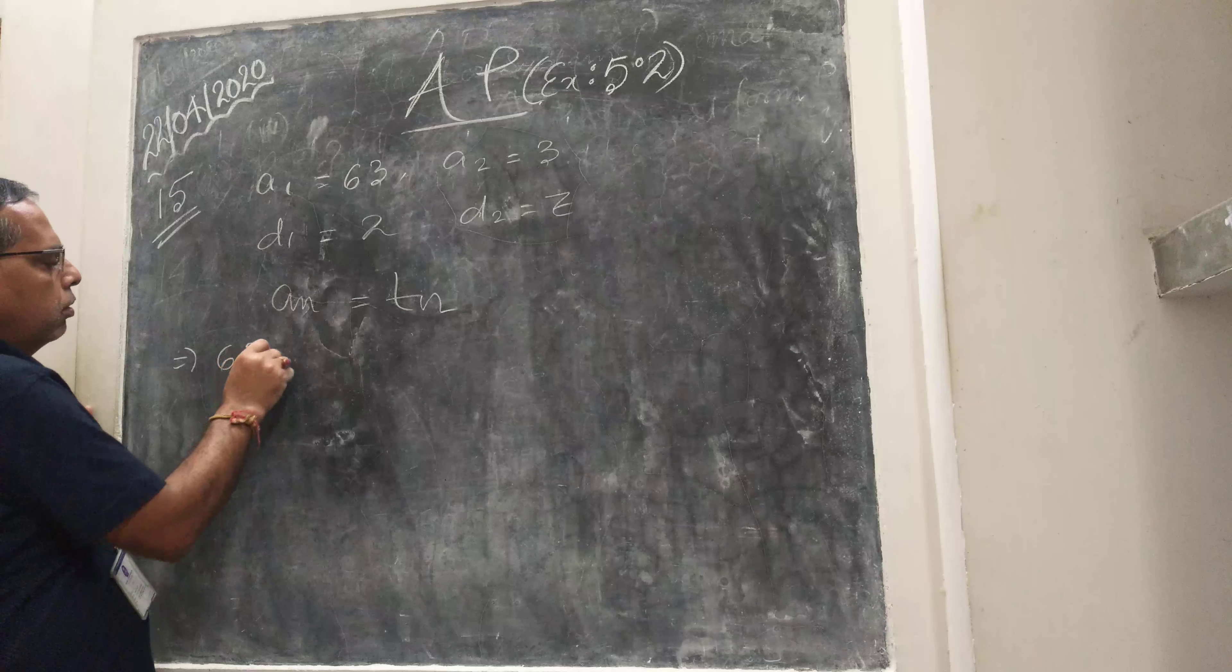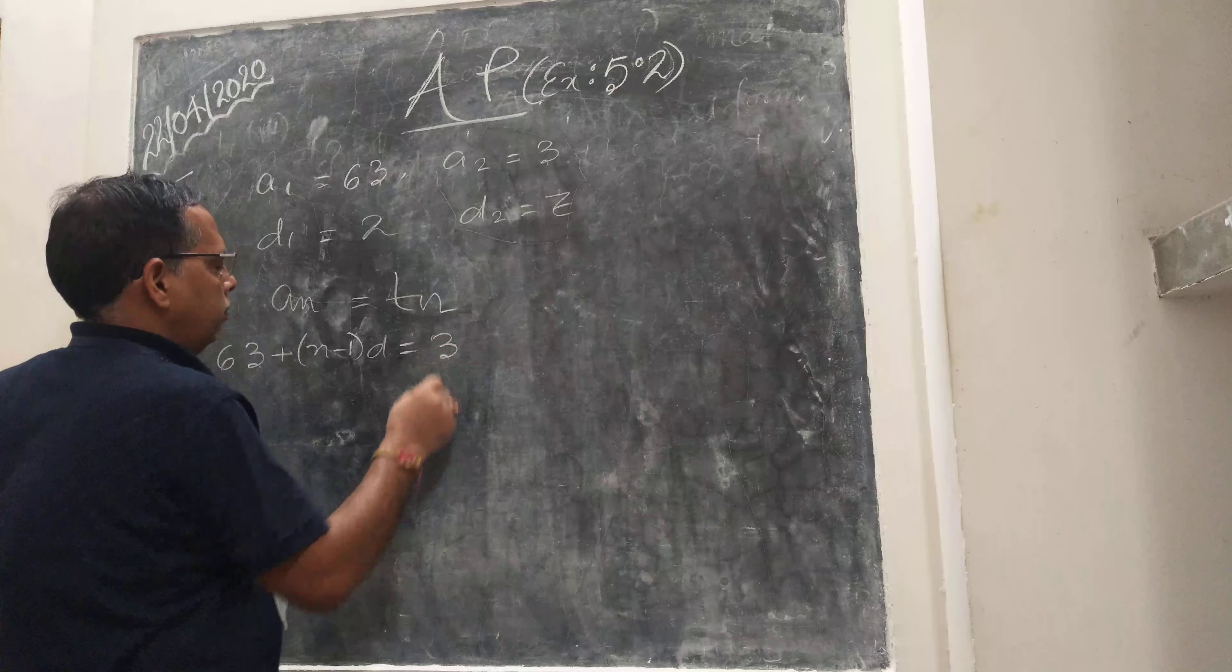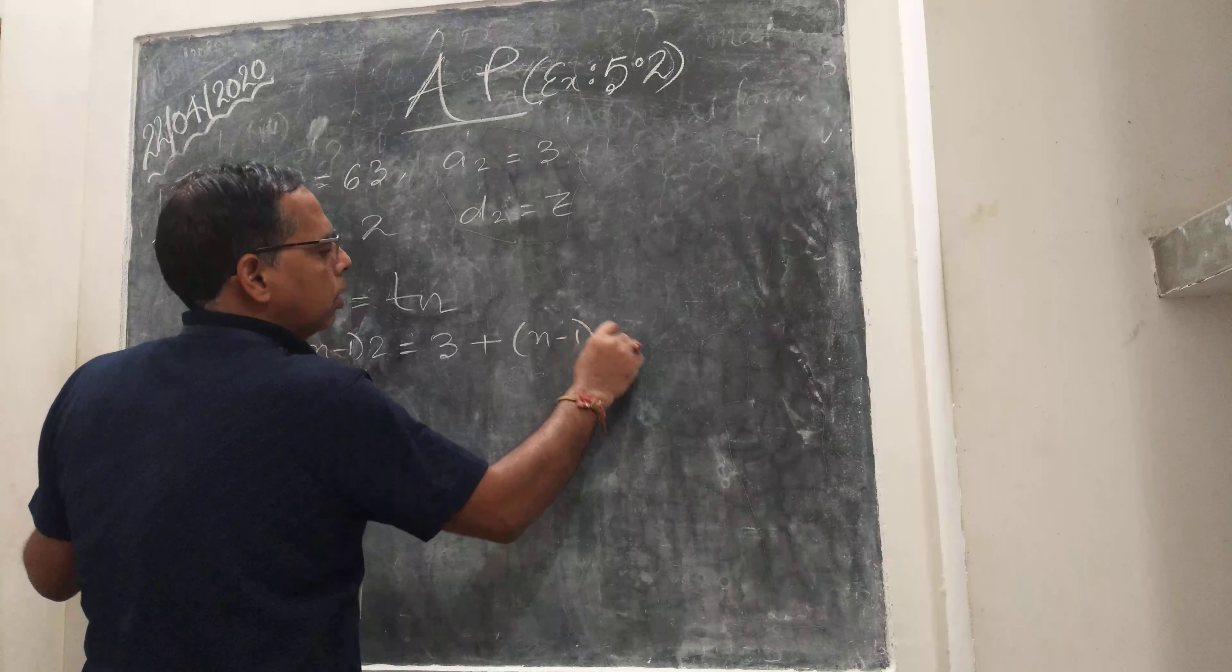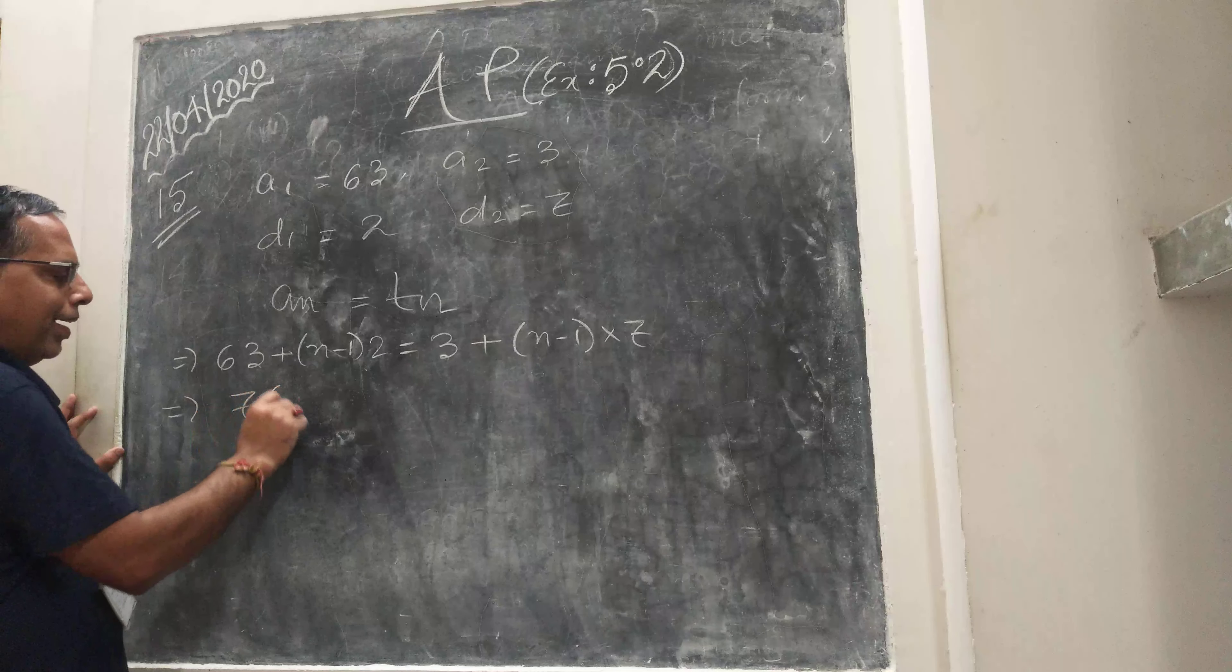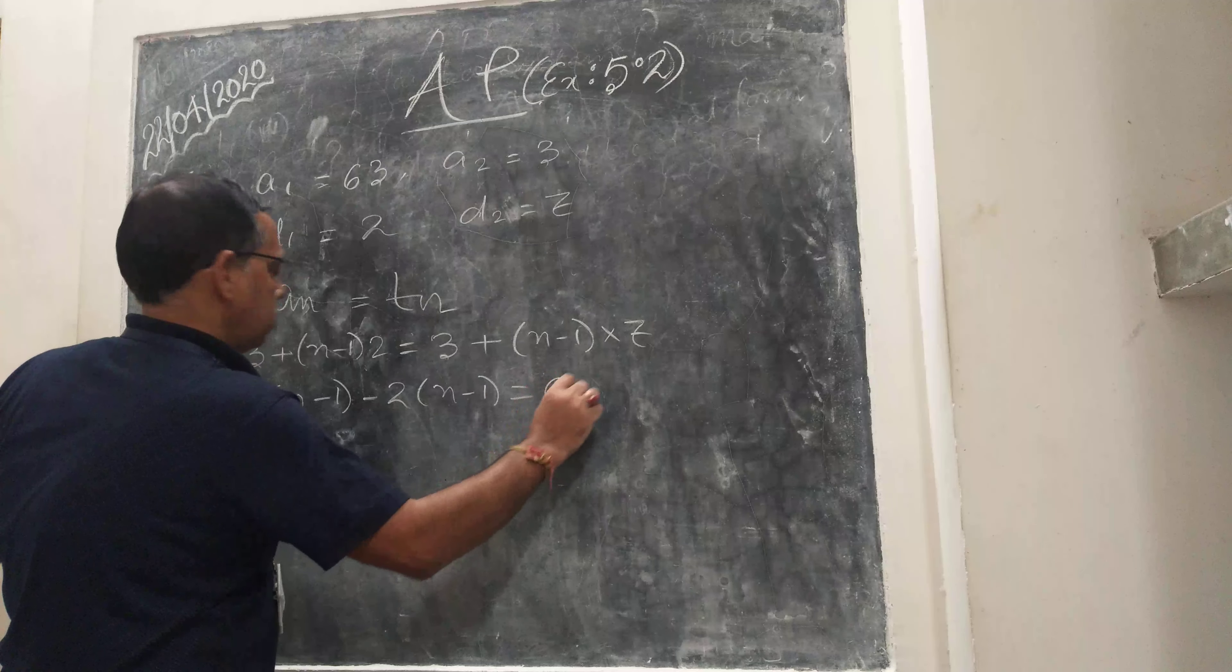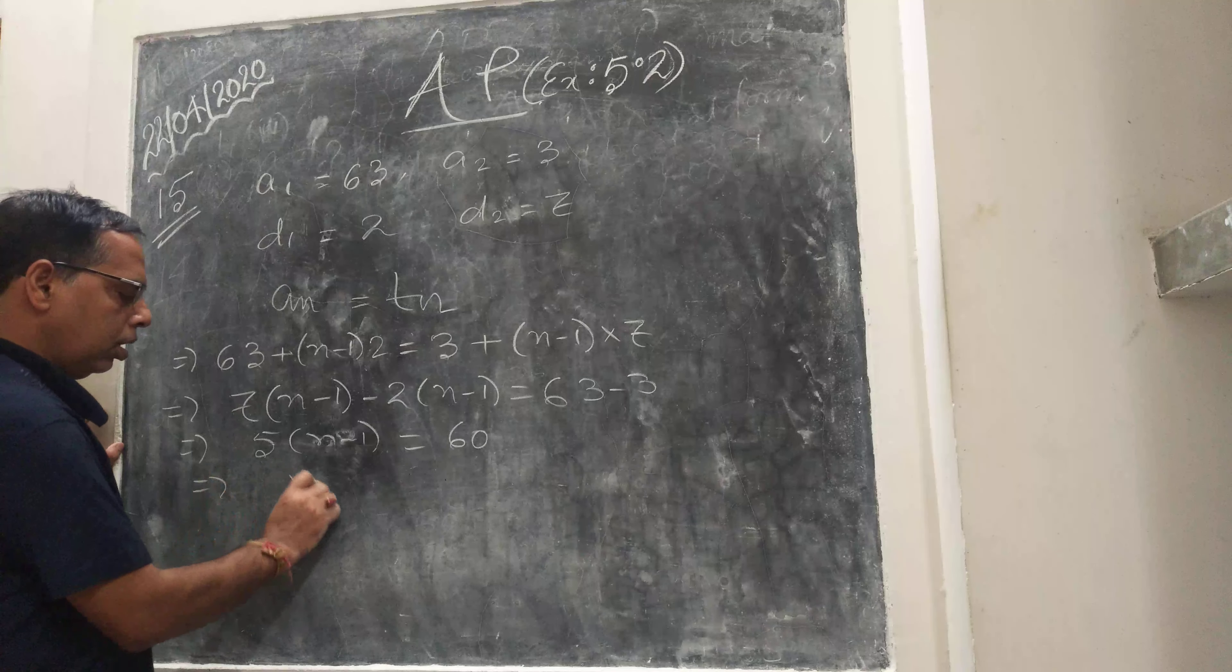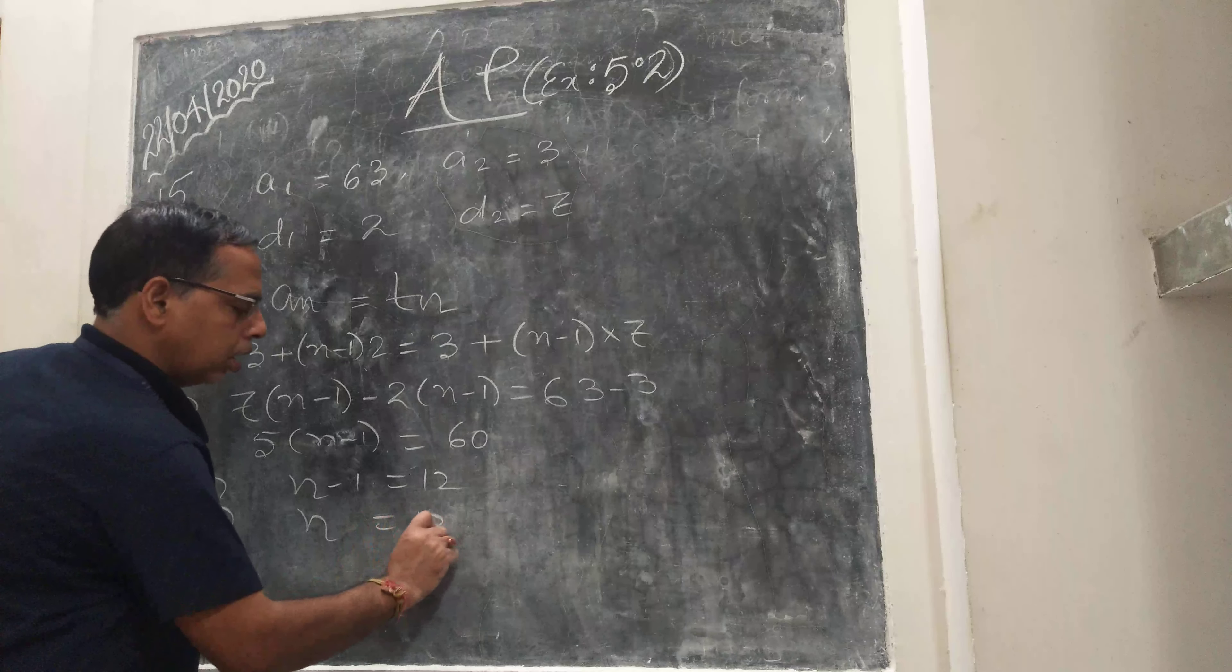So 63 plus (N minus 1) times 7 equals 3 plus (N minus 1) times 7. Wait, let me recalculate. 23 plus (N minus 1) times 7 equals 3 plus (N minus 1) times... So 7(N minus 2) equals (N minus 1)... 5(N minus 1) equals 60. Implies N minus 1 equals 12. Implies N equals 13.